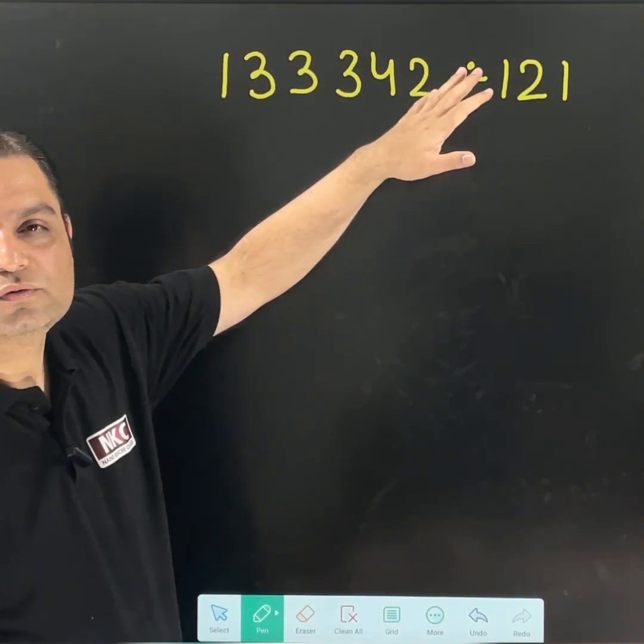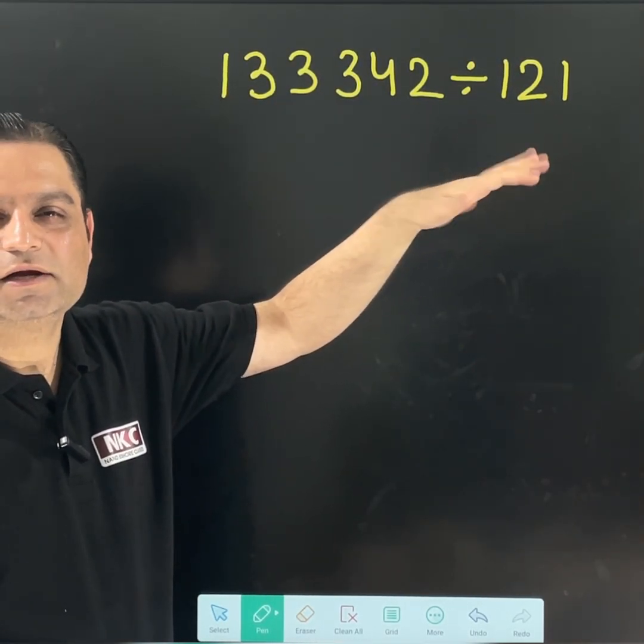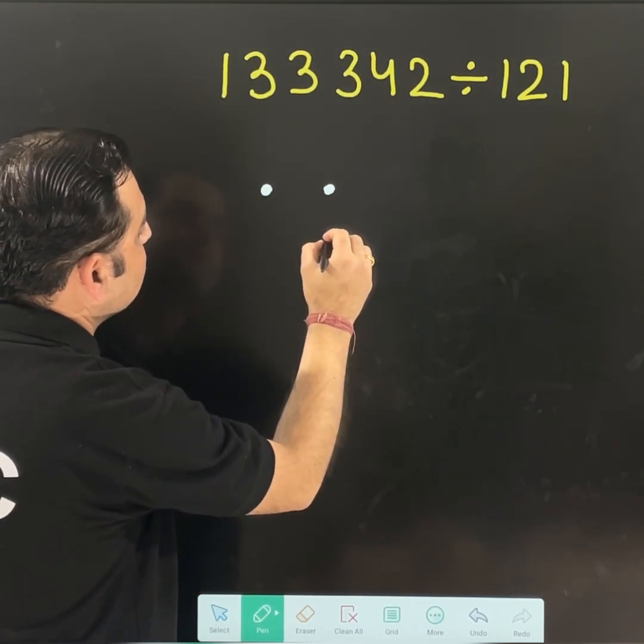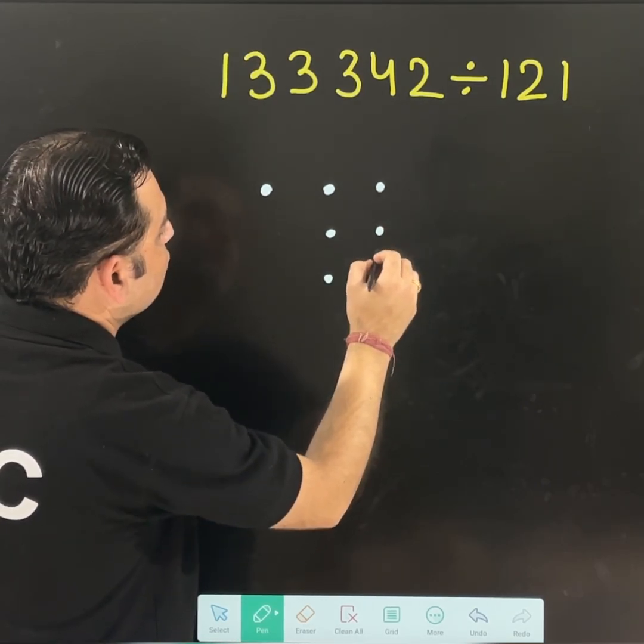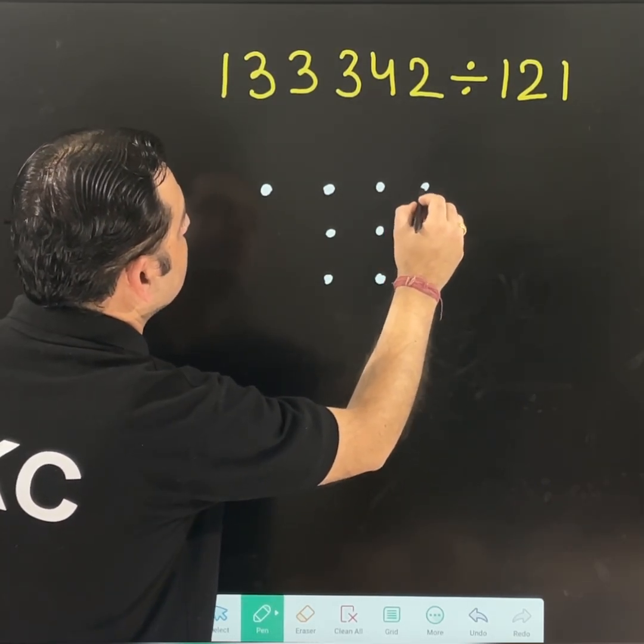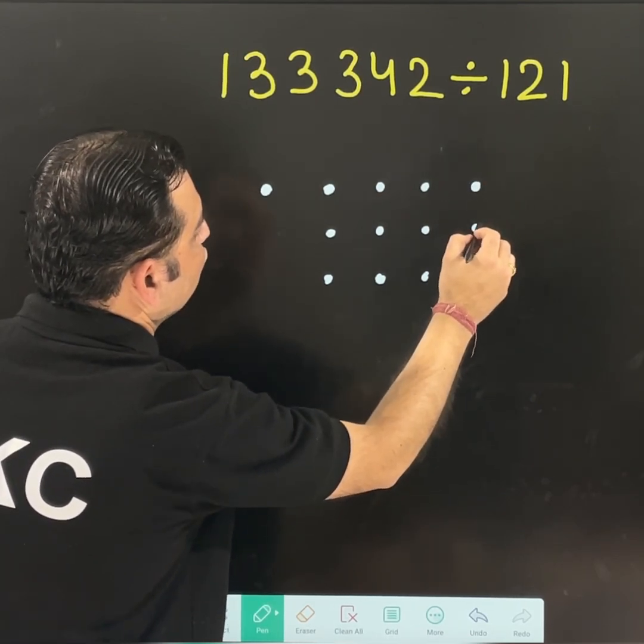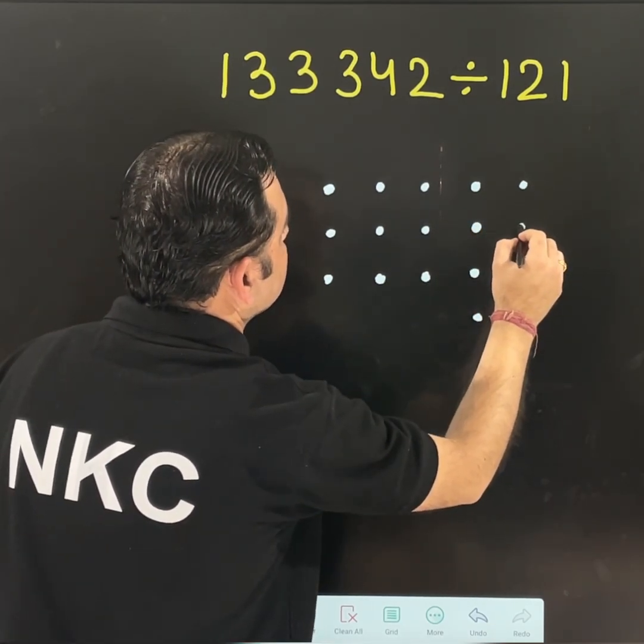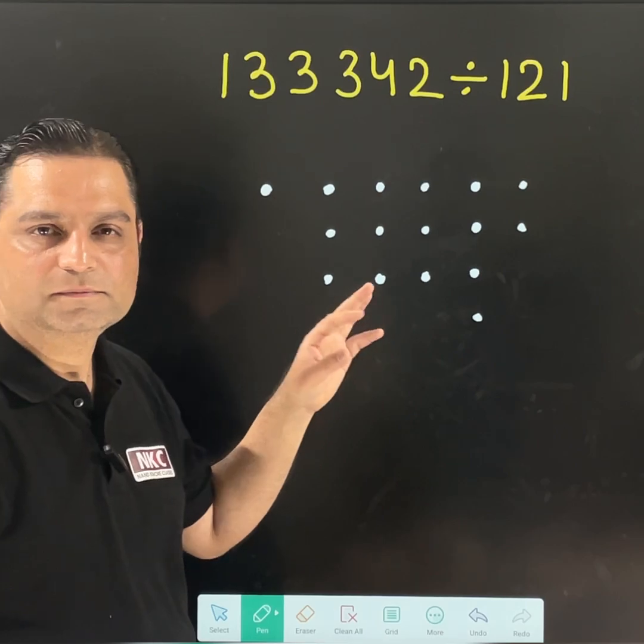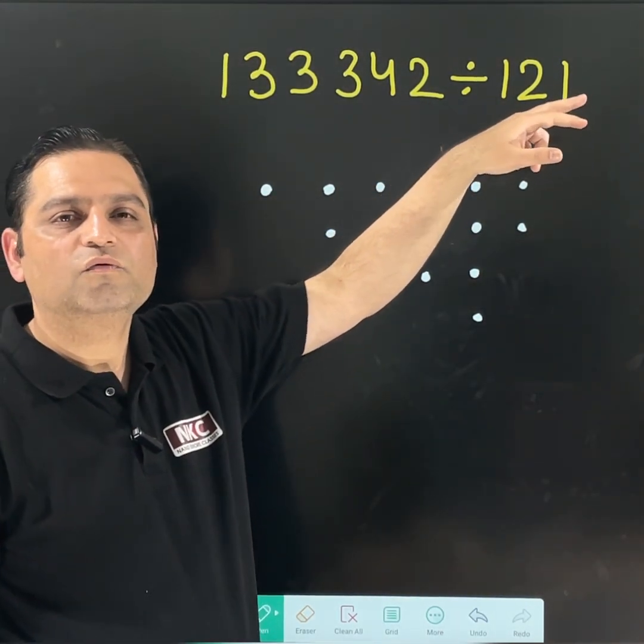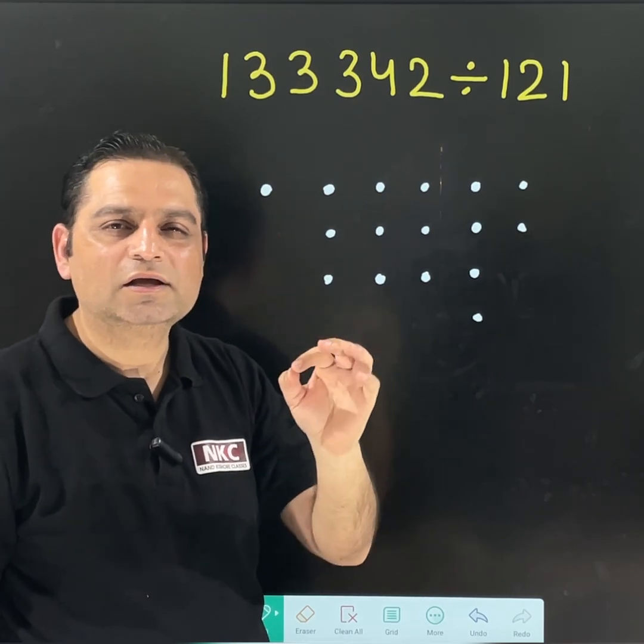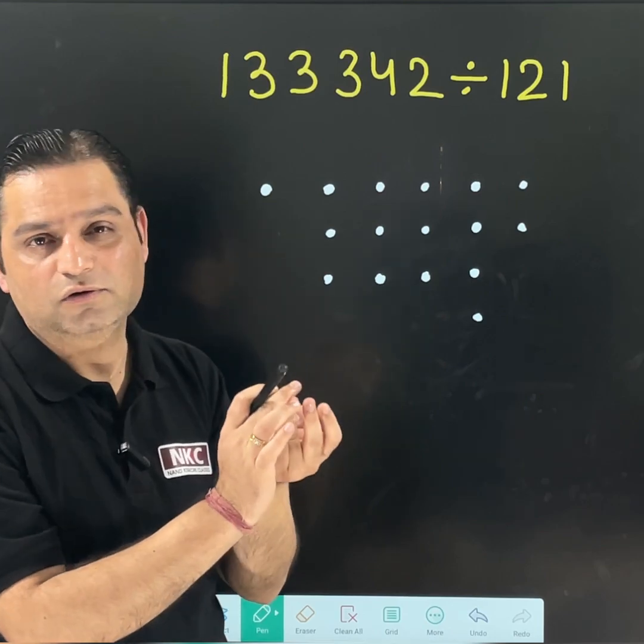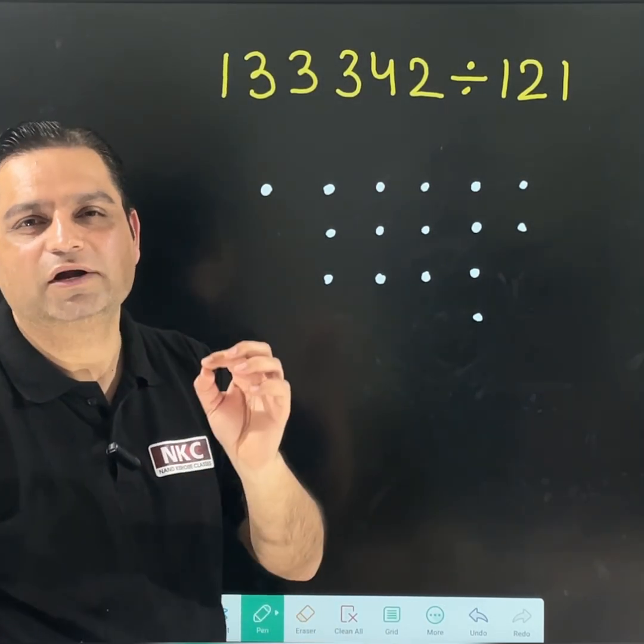I am going to take one more example. Let us have a look at the question. 1, 3, 3, 3, 4, 2 to be divided by 1, 2, 1. Let us start making the dots. 1 means 1 dot. Then 3 dots thrice. 1, 2, 3. 1, 2, 3. 1, 2, 3. Then 4 dots. 1, 2, 3 and 4. And at the end, I am taking 2 dots. I hope this is clear. What do we need to make? 1, 2, 1. Our main aim is to cancel 1 dot from the first, 2 dots from the second column and 1 dot from the third column. Design is your choice. Main point is cancelling only.